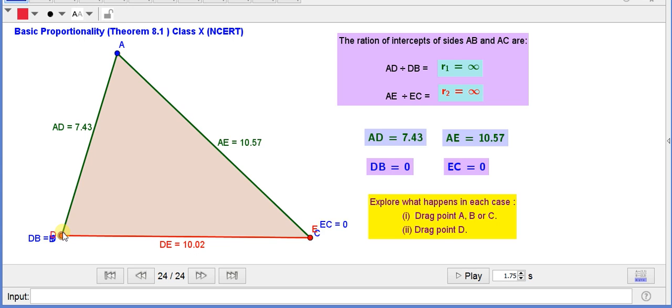So, something, that is 7.43 divided by 0 is not defined or infinite. We can say AE is 10.57 divided by EC is equal to 0. So, it is also not defined or we call it infinite R2.